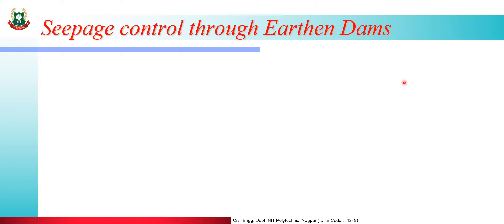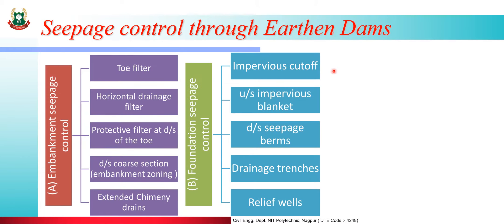Seepage Control through Earthen Dam — what is seepage control? It means that the water seeping under the foundation or through the body of the dam should be controlled. Seepage control through earthen dams is classified in two categories: first is embankment seepage control, which means seepage through the body of the dam.